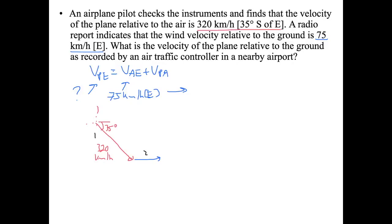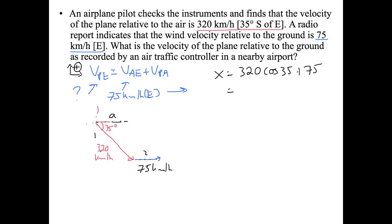For the x-components, taking rightward as positive: x1 equals 320 cos 35 (the adjacent side), and x2 equals 75. Entering into the calculator: 320 cos 35 plus 75 equals 337.1 km/h.